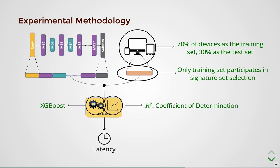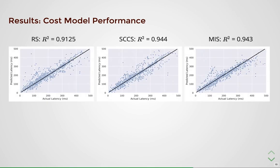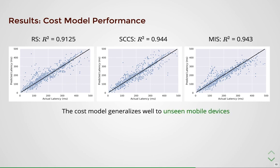Let us now look at the results highlighting the benefits of our proposed cost model. We present the performance of the learned cost model on all three proposed hardware representations. The plots show actual versus predicted latency for the devices in the test set. As we can observe, all three methods show superior performance, exemplified by high R-squared values and alignment of predicted latency towards the ideal X equals Y line of fit, showing that the cost model generalizes well to unseen hardware devices.